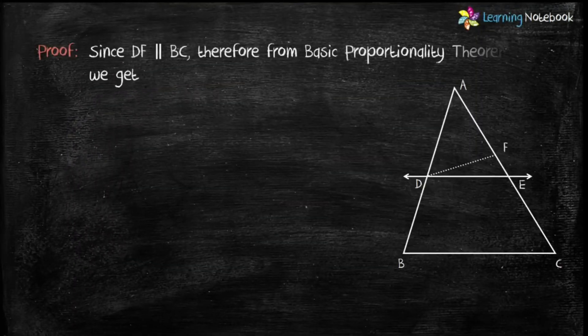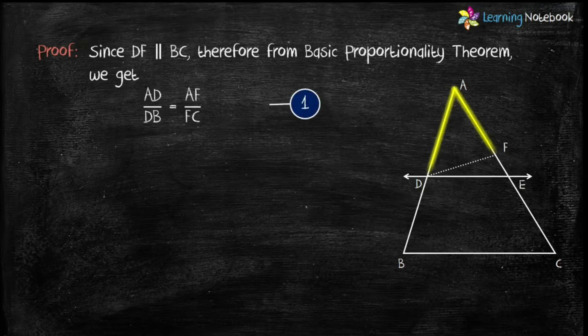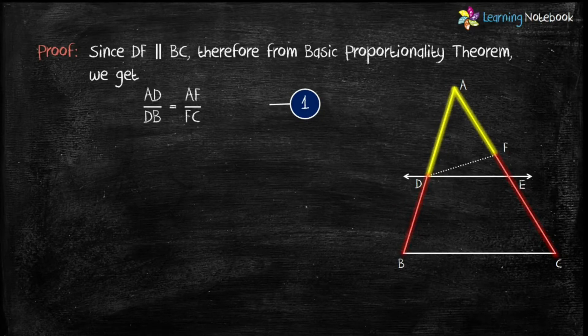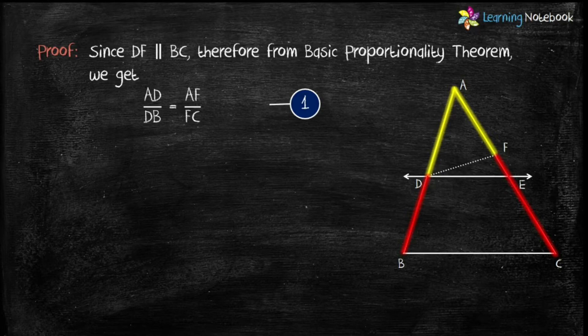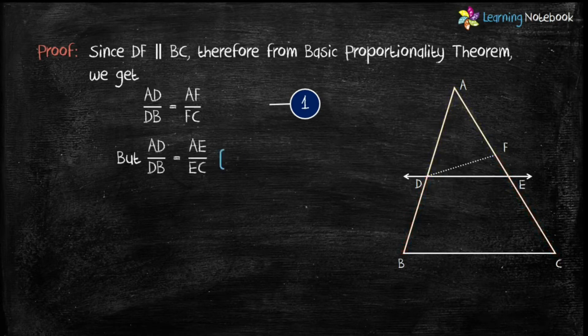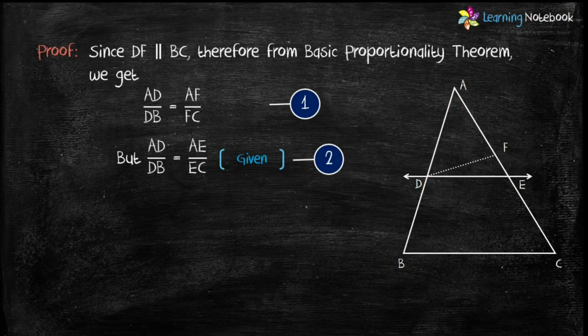Now, since DF is parallel to BC, therefore from basic proportionality theorem, we get AD by DB equals AF by FC. Let's mark it as number 1. And we are given AD by DB equals AE by EC. Let's mark it as number 2.